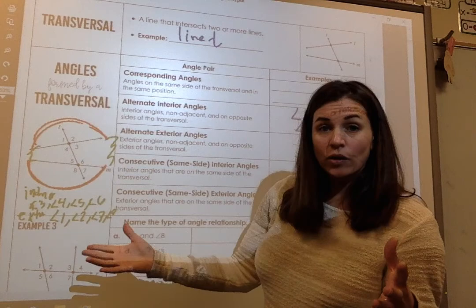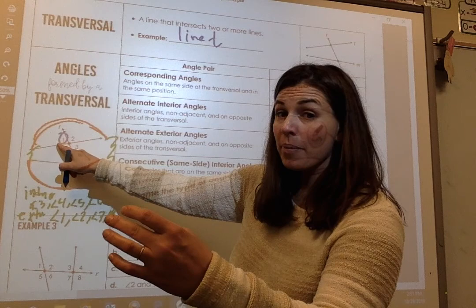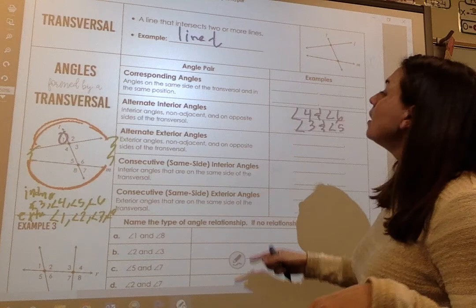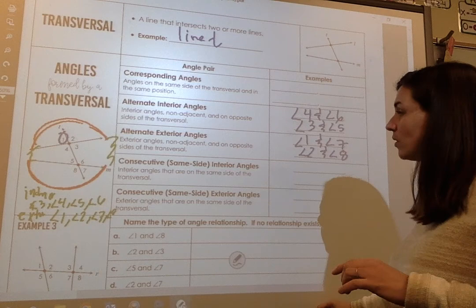For alternate exterior angles — same concept, except they're on the outside, the hamburger buns. So angle 1 is going to alternate with angle 7. Angle 1 is on the top left, angle 7 is on the bottom right — opposite sides of the transversal, one on top, one on bottom. So alternate exterior angles are angle 1 and angle 7. The other pair is angle 2 and angle 8.